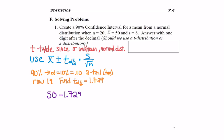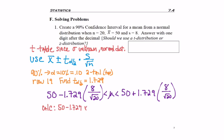Now I'm ready to plug this into my formula, first with subtraction and then with addition. When I enter this in my calculator, I go straight through: 50 minus 1.729 times 8 divided by the square root of 20, then hit equals.